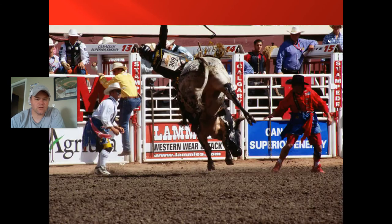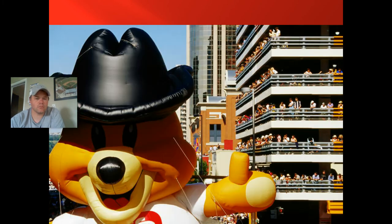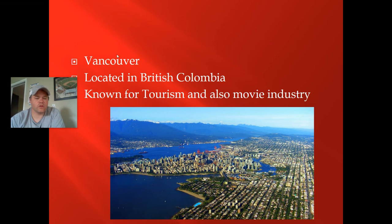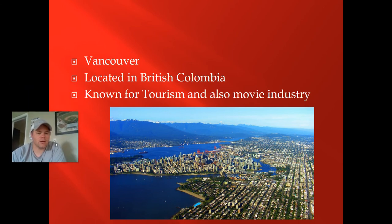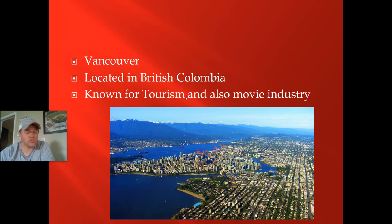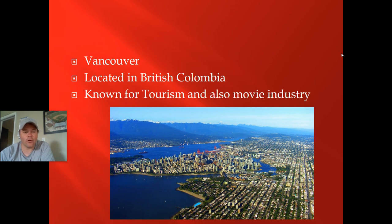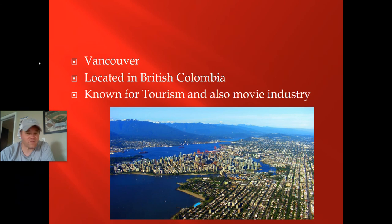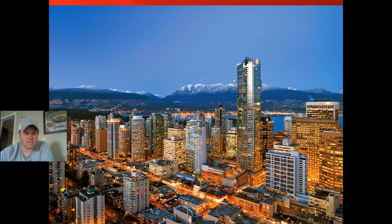Calgary is out west, and like our western regions, you see a lot of rodeos and ranching there. Vancouver is in British Columbia, located right on the ocean. It's known for tourism and its movie industry — lots of filming happens there, making it kind of the Hollywood of Canada. I remember as a kid watching The X-Files and it always said filmed in Vancouver. It's right on the bay, surrounded by mountains — a very scenic place.